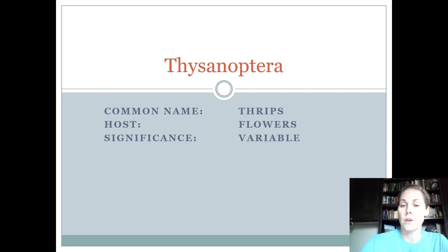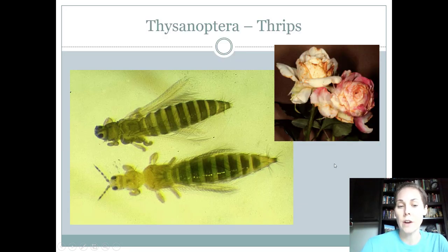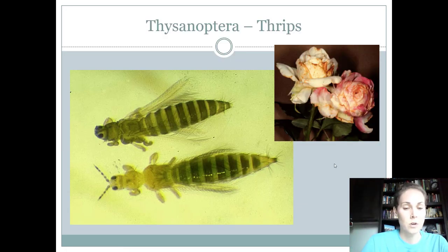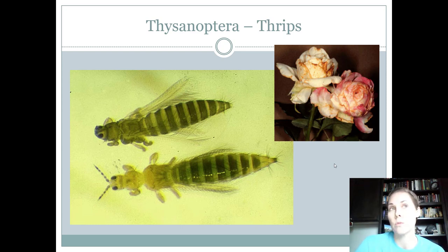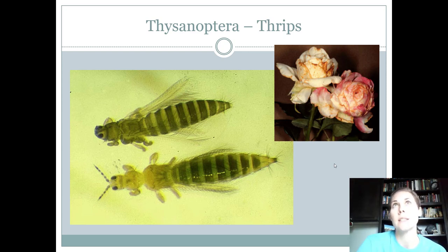Thysanoptera is the order; they're called thrips. They're found on flowers and they're considered variable — not truly a pest or not a pest, it really depends on the situation. When they are a pest, they can cause damage to roses especially. You can see the bronzing that they make. They feed on pollen, so they're kind of a pollinator, but as a side effect they'll also feed on the edges of the petals of flowers.